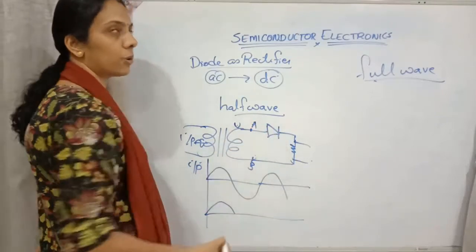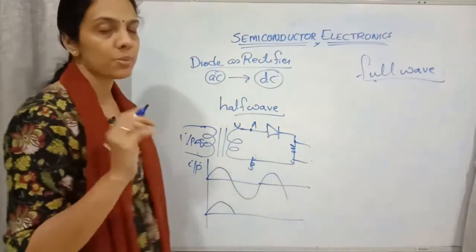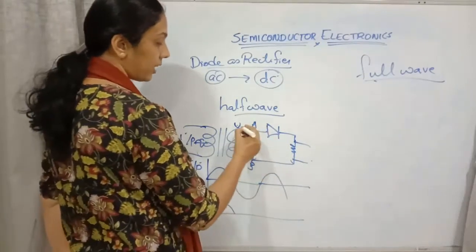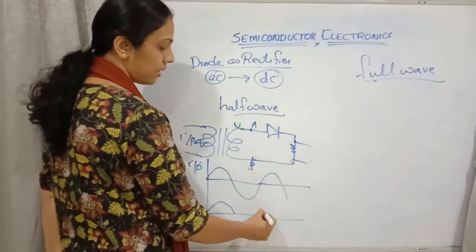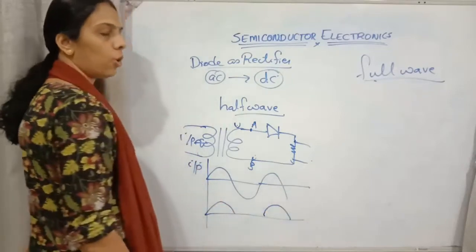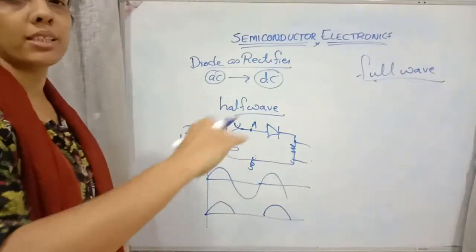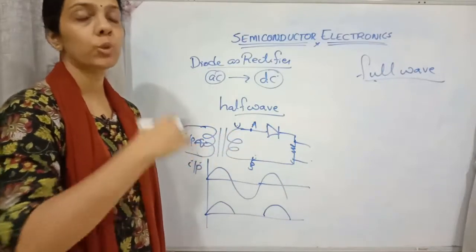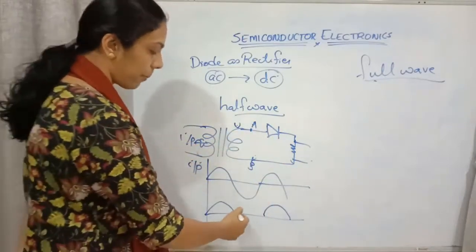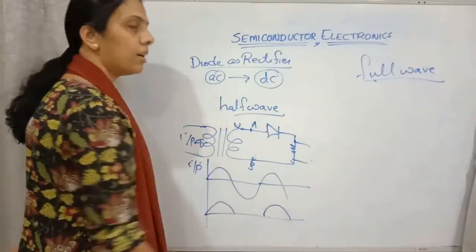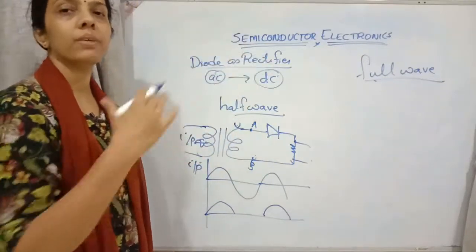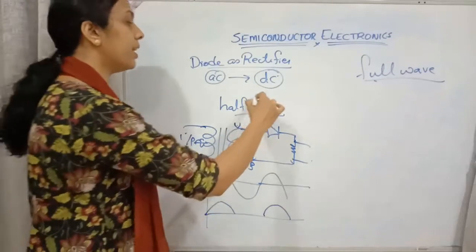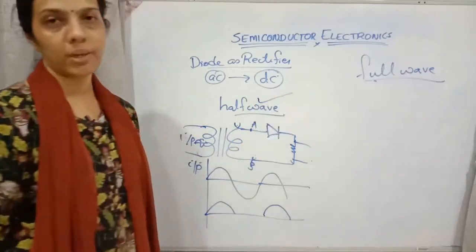When the negative half comes, negative is connected to the positive terminal, so it is under reverse bias — no output. Then the next positive half comes, giving output again. Only the positive values are rectified; the negative half is cut off. So only half the wave is getting rectified, which is why it is called a half wave rectifier.